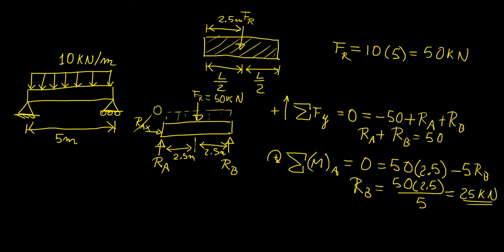That means Ra is also going to have a value of 25 kilonewtons, which we can confirm by substituting back into the first equation. This is not unexpected, since this is actually a symmetric loading — the resultant force acts right at the middle of the structure, so we expect the reaction forces on both supports to be exactly the same.